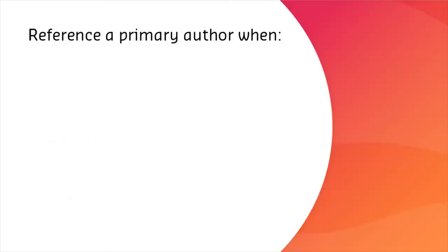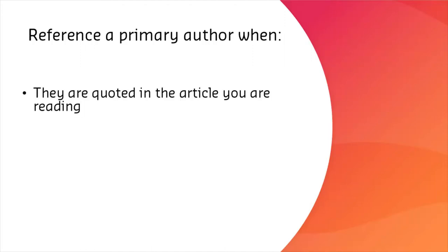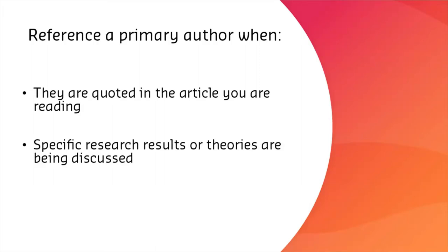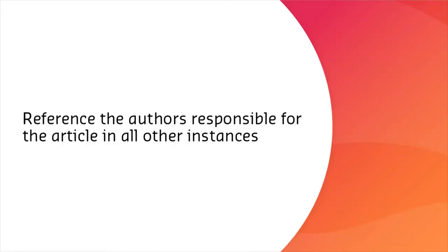You should always reference the primary or original author in a few situations: 1. When their exact words have been used in the article you are reading — in other words, they've been quoted. 2. When specific results from research is being communicated, or a theory which they are responsible for. Outside of these scenarios, the information you are reading is the responsibility of the authors who wrote the article. It's their narrative, their interpretation of other people's research. They've translated it and packaged it for you, so you should be referencing them.